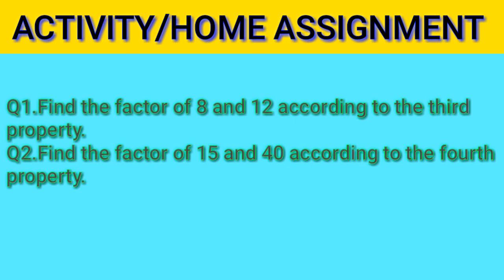Question number one: find the common factor of 8 and 12 according to the third property. Brilliant! The factor is 4, because 8 and 12 are both divisible by 4, and the sum of 8 and 12 is 20, and 20 is also divisible by 4.